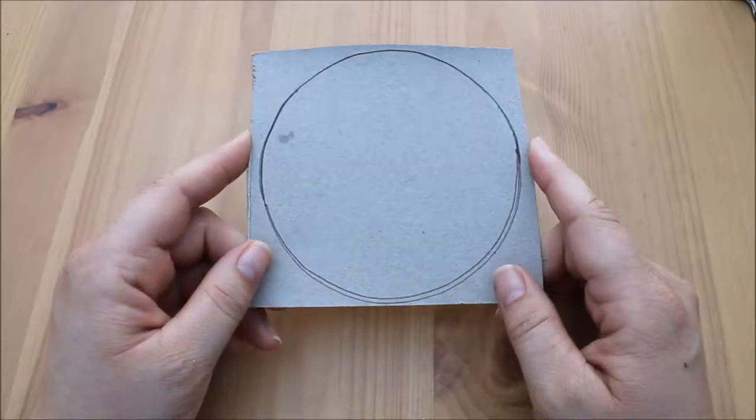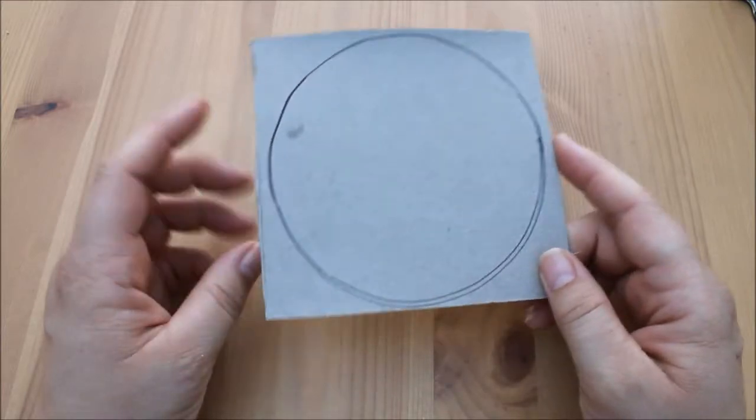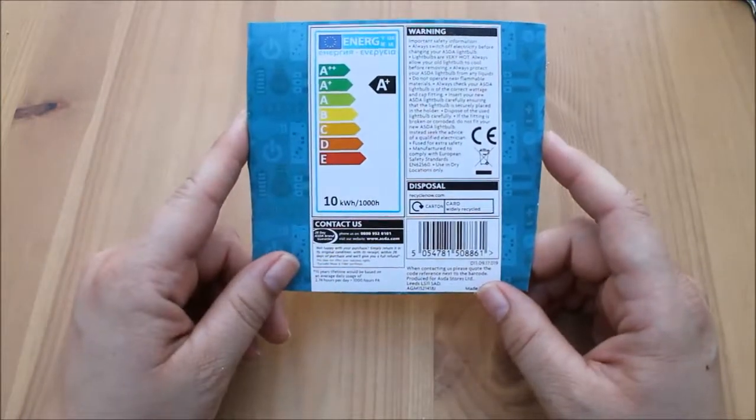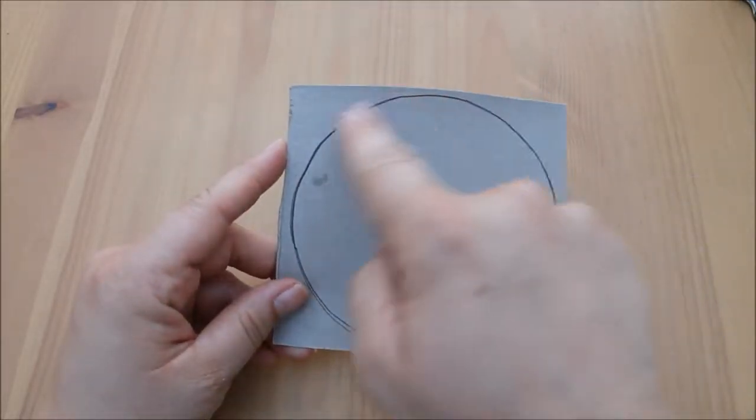So what we want to do first is take a fairly sturdy but not too thin piece of cardboard. I've just used the box from a set of light bulbs and draw a circle on it. I've drawn around a coaster.